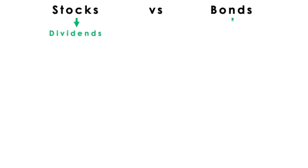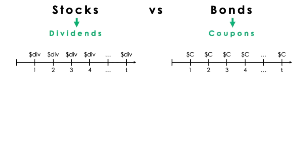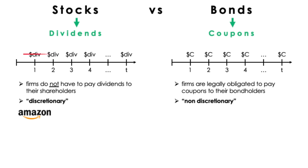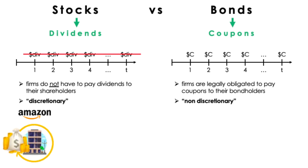Dividends to stocks are like coupon payments to bonds. Interestingly, unlike coupon payments in a bond, firms are not obligated to pay the shareholders any dividends, but most do in order to incentivize investors to buy their shares. Since firms can decide whether or not they want to pay dividends, we call dividends discretionary, while coupon payments for a bond are non-discretionary. For example, Amazon chooses not to pay dividends at all, and instead chooses to reinvest the surplus of profits back into the firm in hopes of increasing profits in the future. This would still benefit shareholders, as the expectation of higher profits in the future would increase the firm's share price, resulting in capital gains for the shareholders.